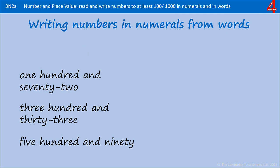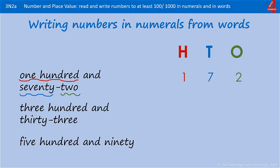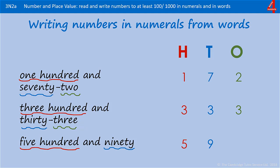We do this the other way round as well — we have the numbers in words and we have to identify which digits go in which place value. I've put the hundreds, tens, and ones notation at the top. The first one is 100, so we put a one in the hundreds column, then we have 70 so that's seven tens and two — one hundred and seventy-two. The next one: three hundred and thirty-three — three hundred, thirty is three tens, and then three ones. The last one: five hundred and ninety — five hundred, ninety is nine tens, but there's nothing in the ones column so we just put a zero in there.